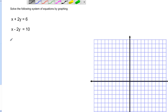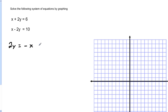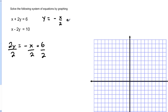I'll take the first equation. We have 2y, and I'm going to move the x to the other side by subtracting x from both sides, giving us negative x plus 6. We don't want 2y — we want y by itself — so we divide everything by 2, and we get y equals negative x over 2 plus 3. There is our first equation solved for y.